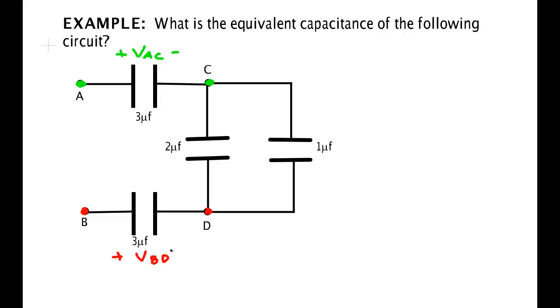It doesn't matter if those two numbers turn out to be the same. The bottom points where you would connect the voltmeter between B and D are not the same place as the points you would connect to measure the voltage across the top capacitor.